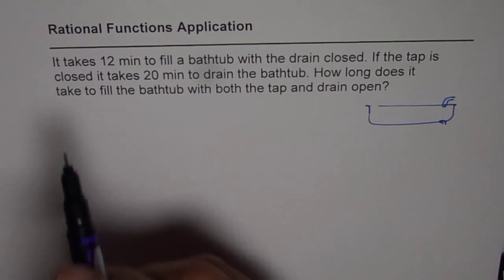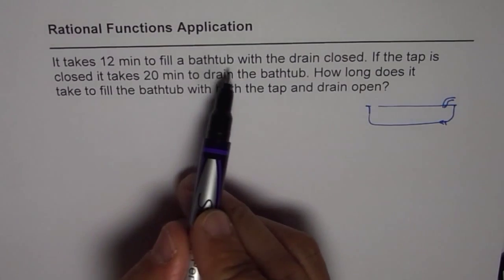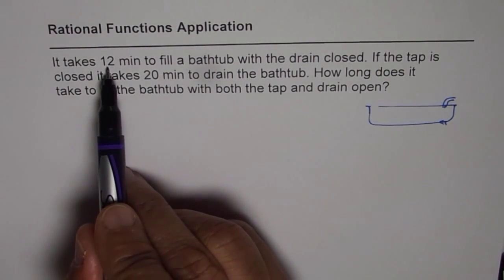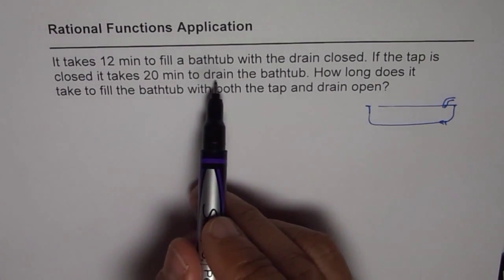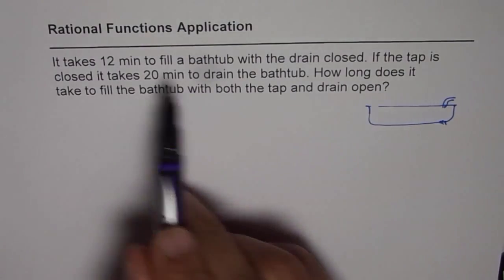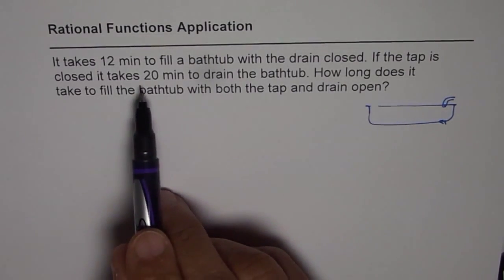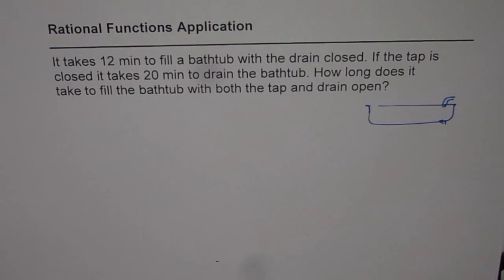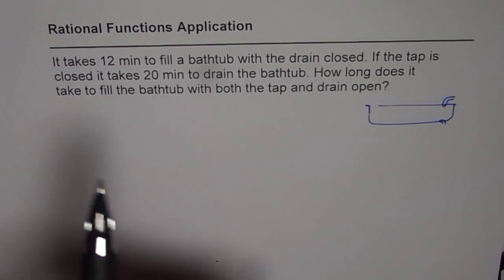Plus it has a drain also to let the water out. Now, whenever we say it takes 12 minutes to fill the bathtub, that means it is a positive operation as compared to draining out which will be considered as a negative operation. So we'll use positive sign for filling up and negative sign to drain the water out.